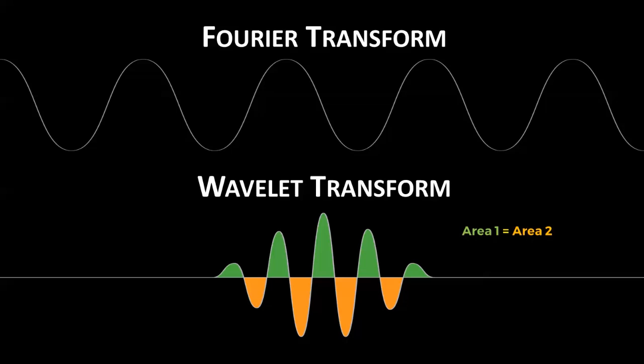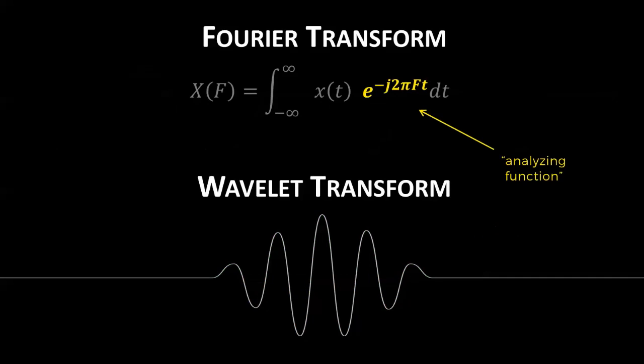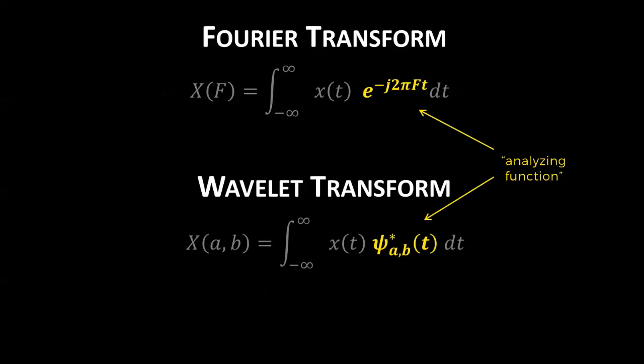Let's look at the Fourier transform again. Remember that for the Fourier transform, we are simply multiplying the signal by an analyzing function, which is a bunch of sinusoids. Similarly, for the wavelet transform, this setup is still the same, but instead we are multiplying the signal by a wavelet analyzing function.